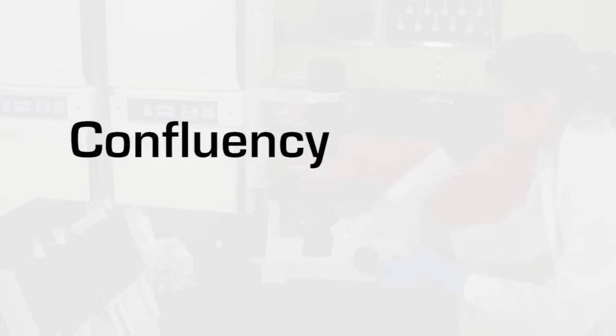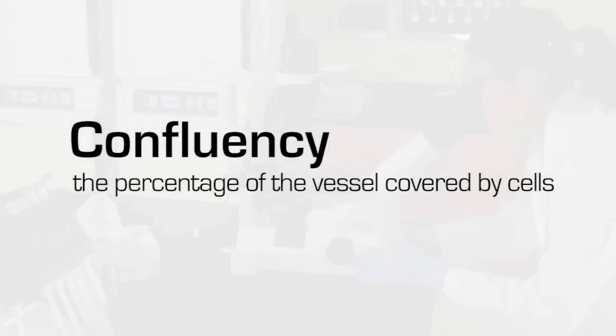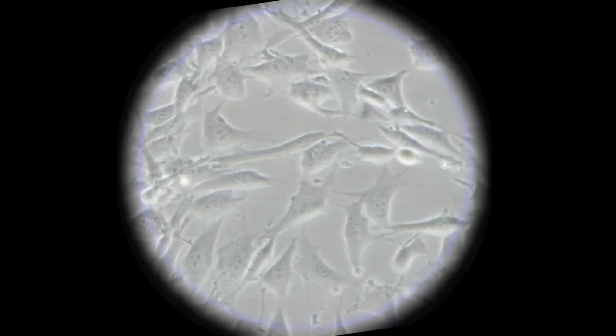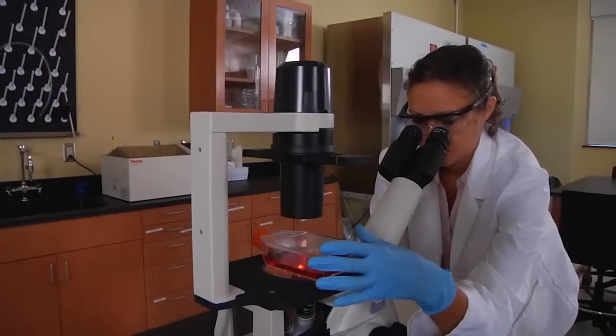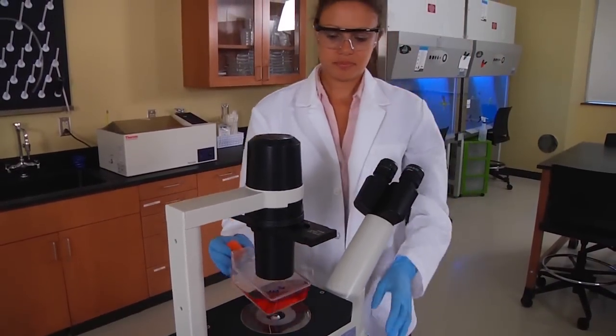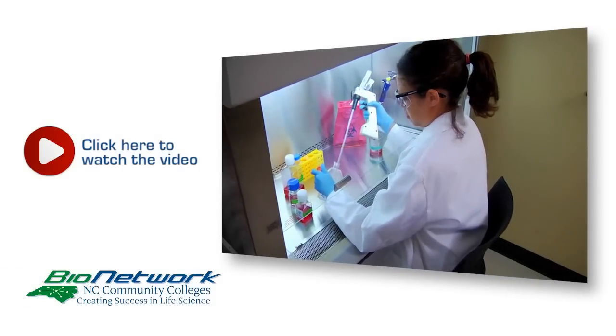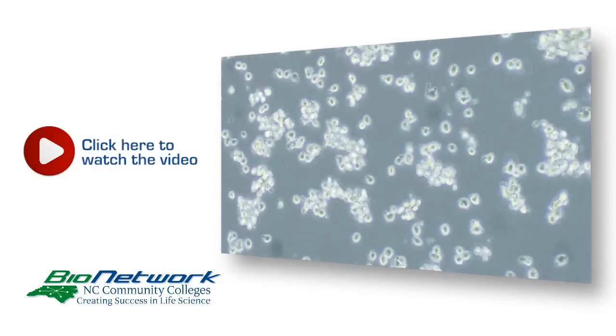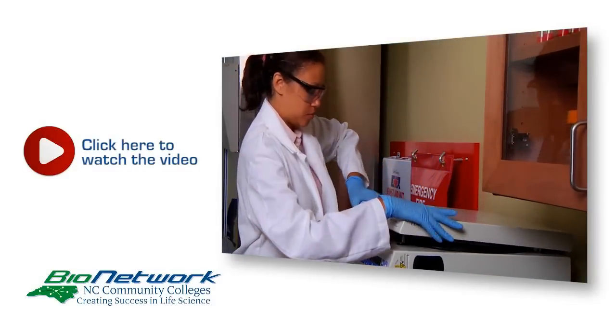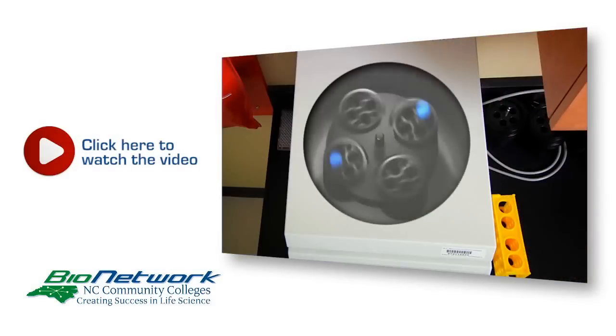Next, calculate the percent confluency. Confluency is the percentage of the vessel covered by cells. Our cells are at about 90% confluency. To begin, trypsinize the cells to generate a single cell suspension and count the cell suspension. Click the link on your screen to watch a demonstration of these steps.